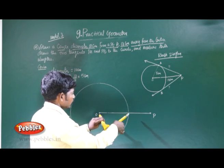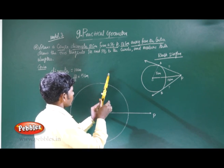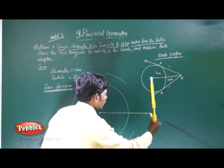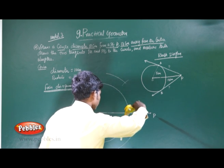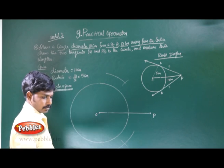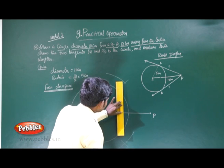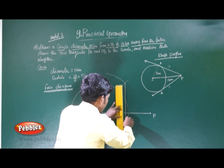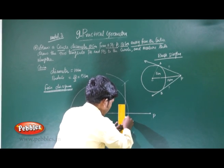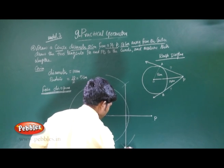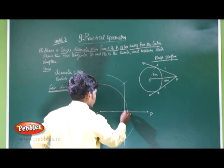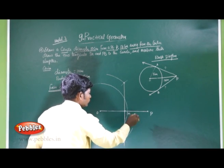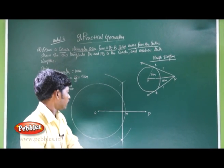Take any convenient radius, more than half of OP. Draw an arc up and down. With the same radius and P as the centre, draw another arc. The two arcs meet at a point, which is the midpoint M of OP. Now take a compass with M as the centre.